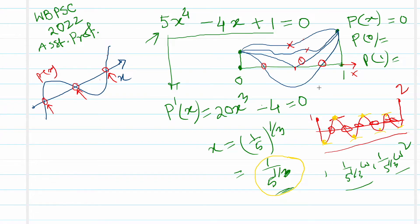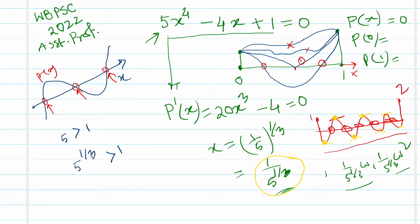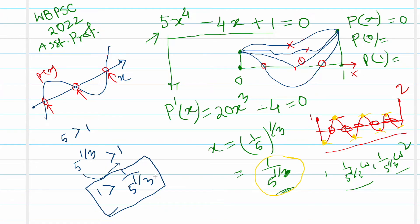The critical point (1/5)^(1/3) is clearly positive. To check it is less than 1: since 5 > 1, taking cube roots gives 5^(1/3) > 1, so 1/5^(1/3) < 1. Therefore the critical point (1/5)^(1/3) lies strictly inside the interval (0, 1).